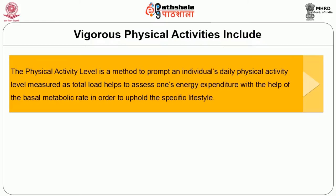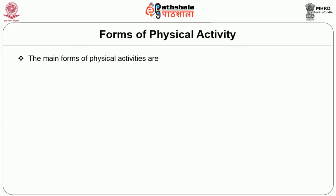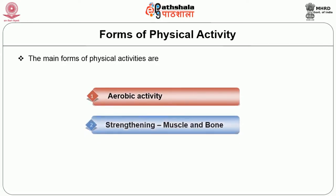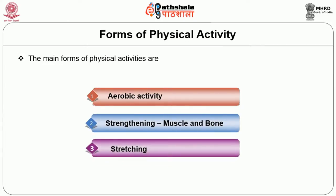Physical activity level is a method to express an individual's daily physical activity level, measured as a total load, and helps to assess one's energy expenditure relative to basal metabolic rate. Physical activity levels can be projected based on the nature of activities the individual engages in daily — classified as aerobic activity, strengthening exercises for muscles and bones, and stretching exercises.